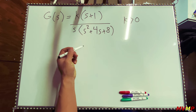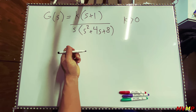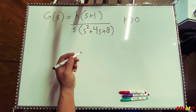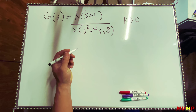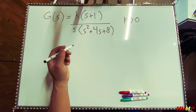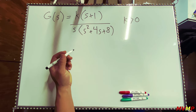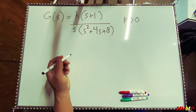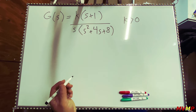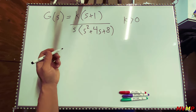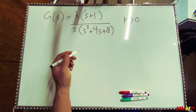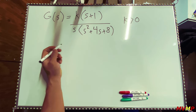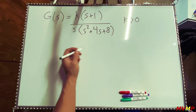You're given a function and you are to find the root locus for it. Some general things we're going to cover are centroid, asymptotes, zeros, poles, break-in/breakout points, angles of arrival and angle of departure, and how to sketch it by hand.